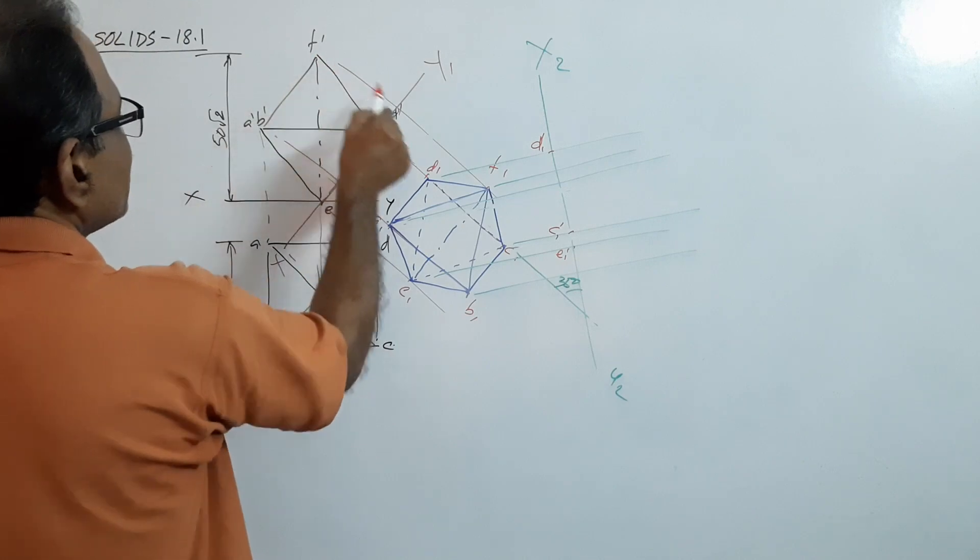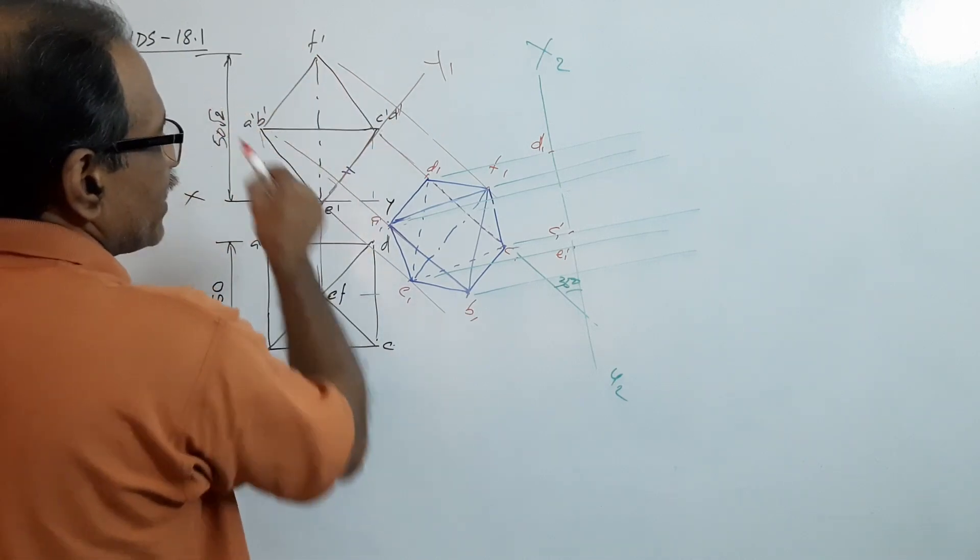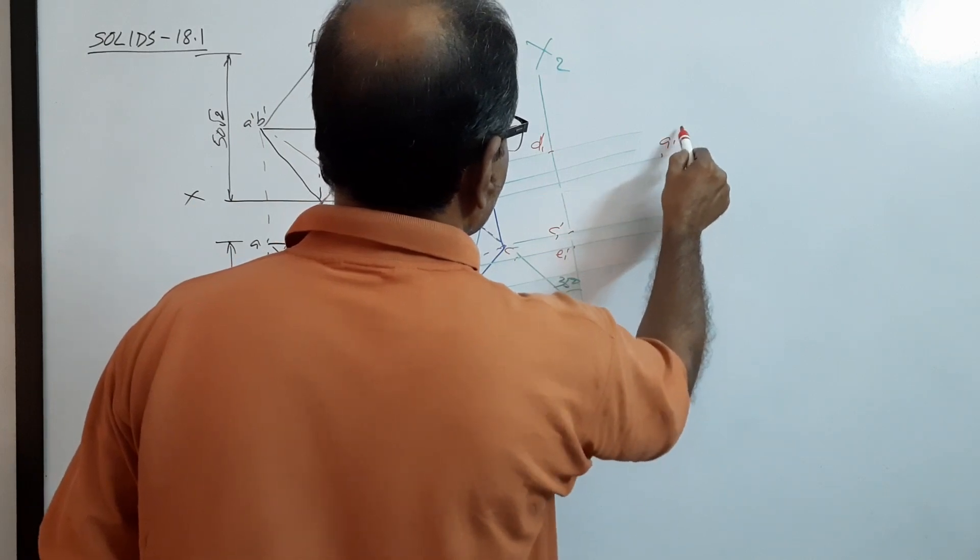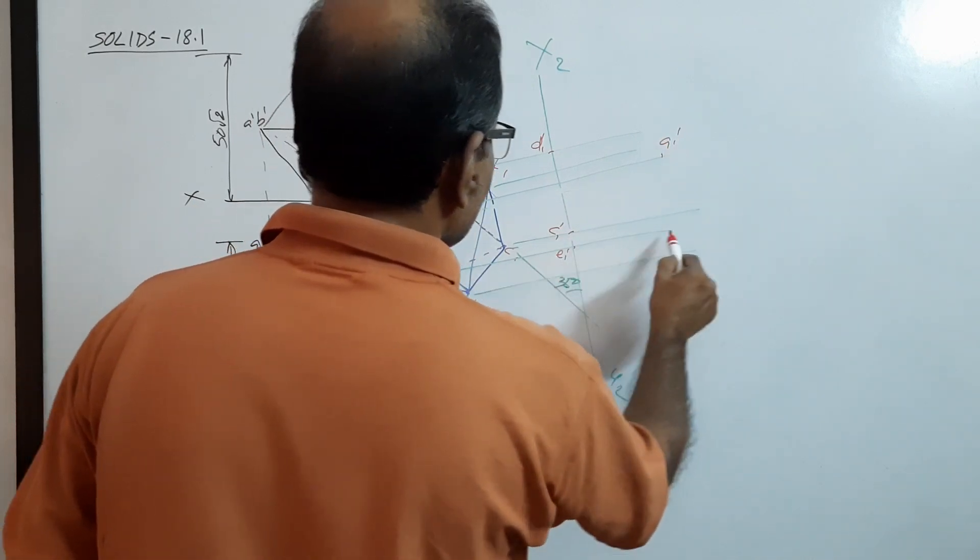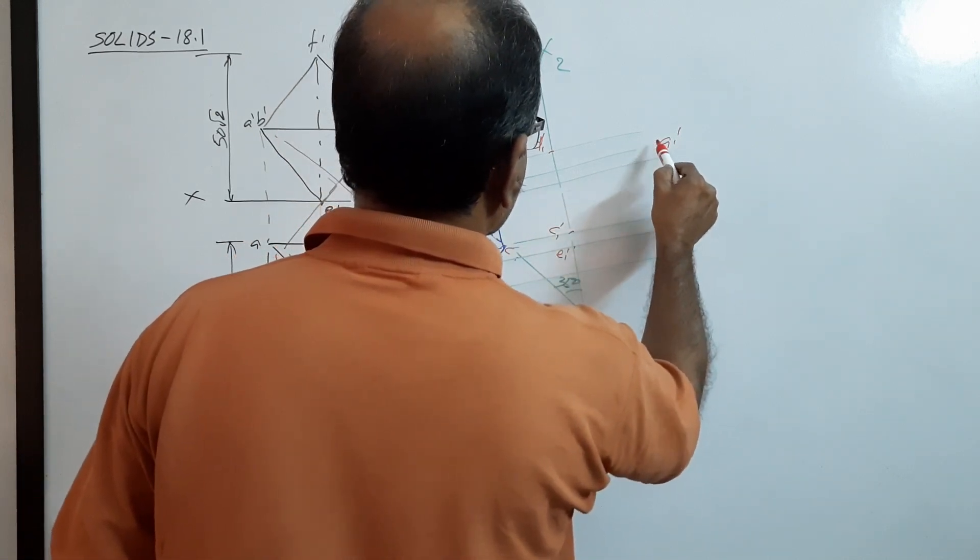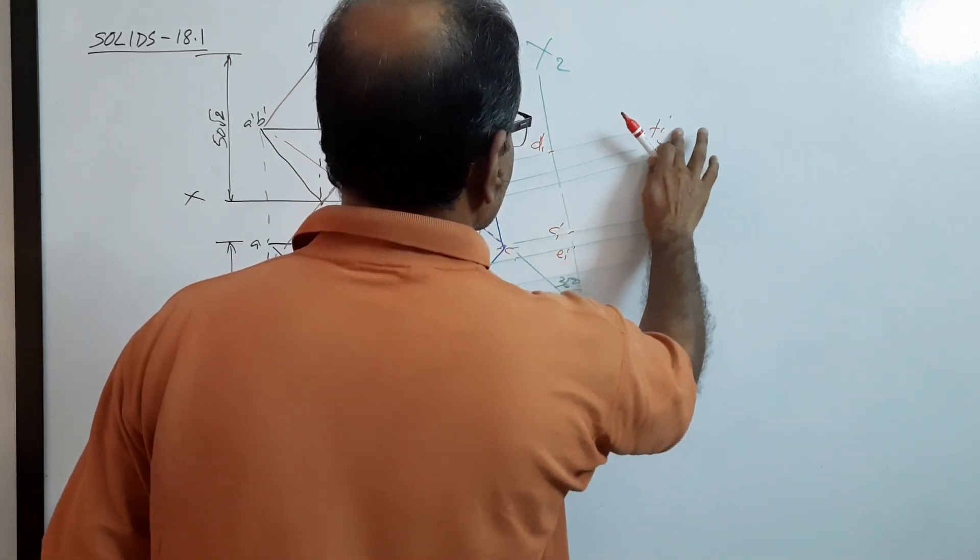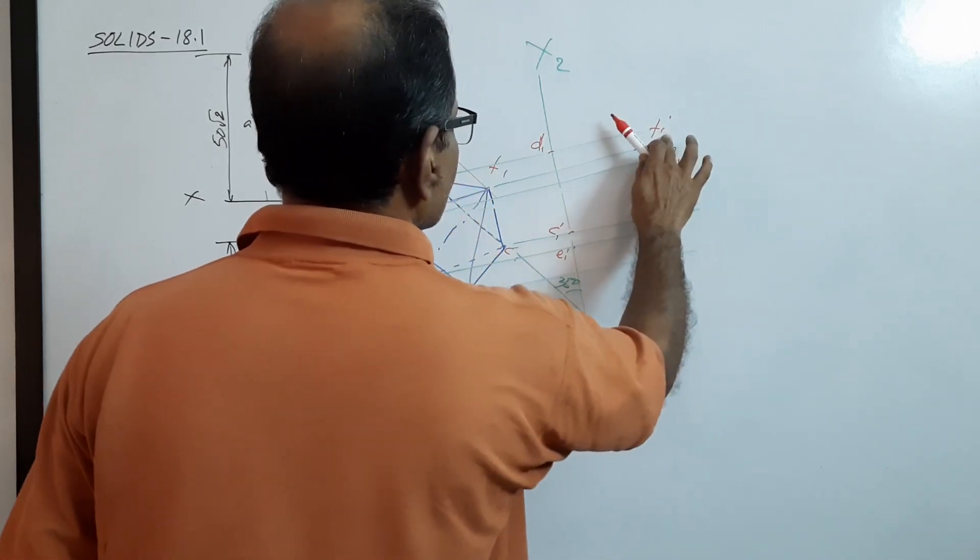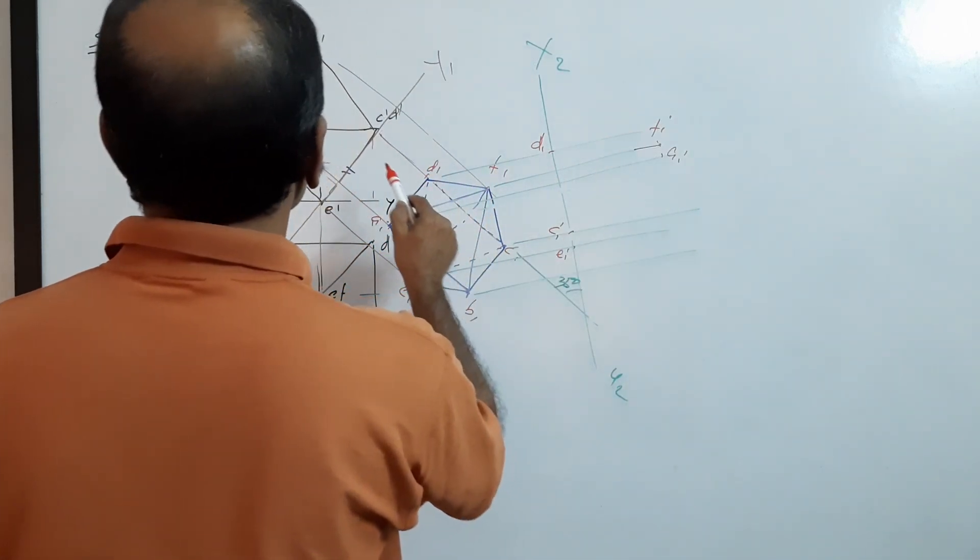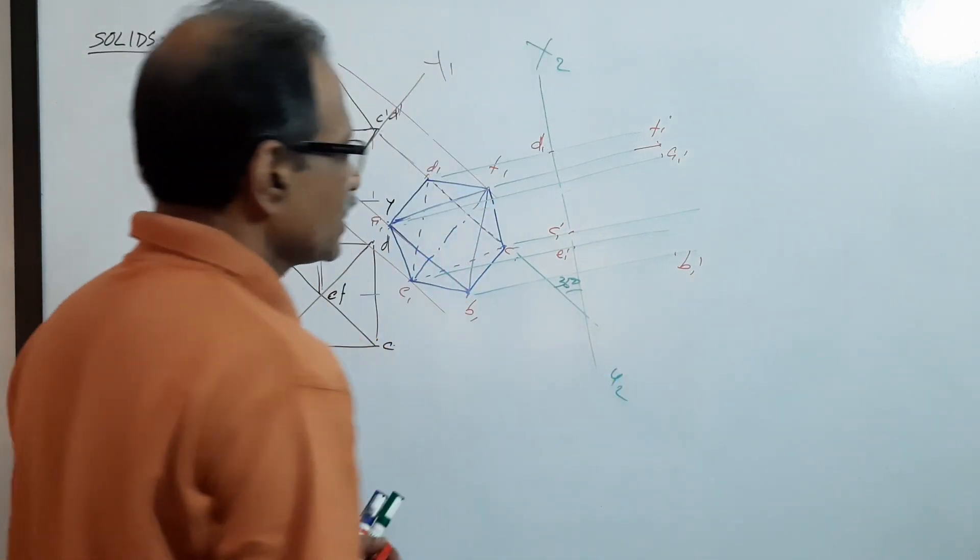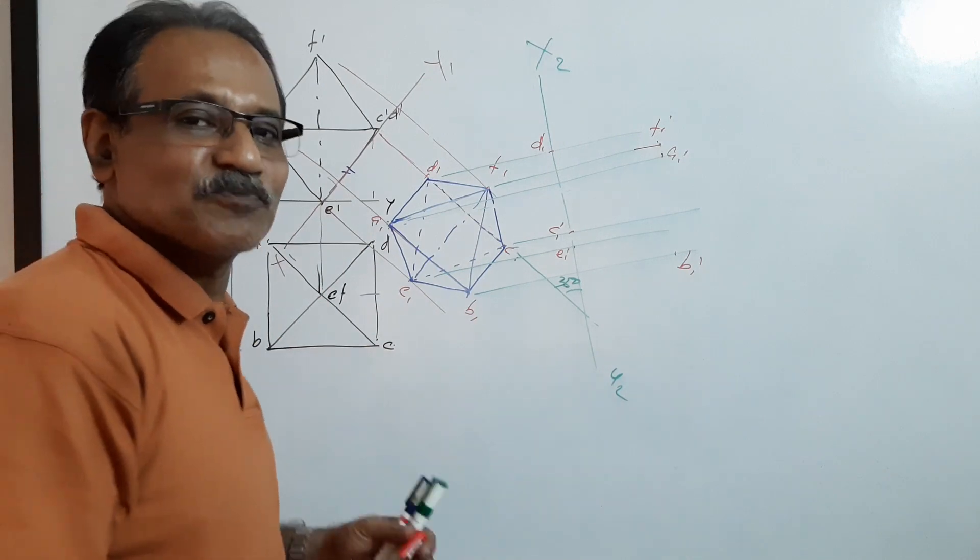A dash, B dash, and F dash, same distance away. A, A1 dash, F, F1 dash, and B, B1 dash. Now connect. I will connect and explain.